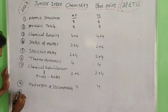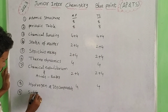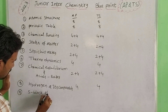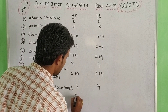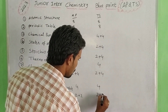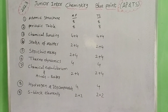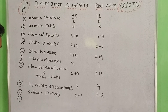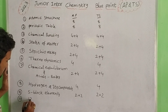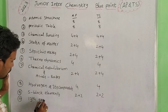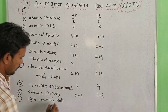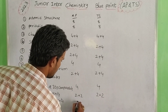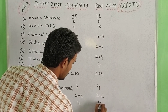9th lesson: S-block elements. S-block elements majority is 2 plus 2, and weightage is equal to 2 plus 2. Next, the 10th lesson: 13th group elements. 13th group elements — weightage is equal to 4 marks.